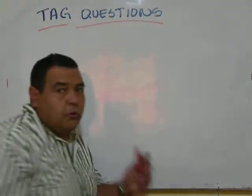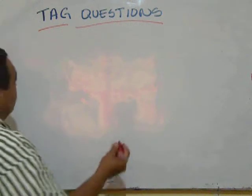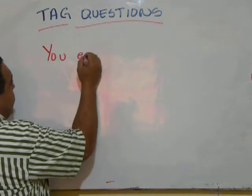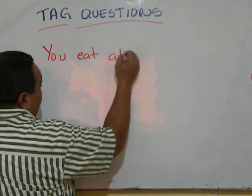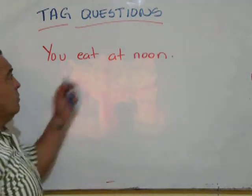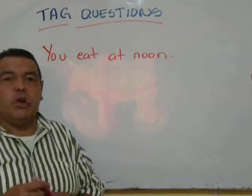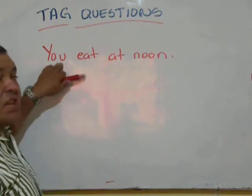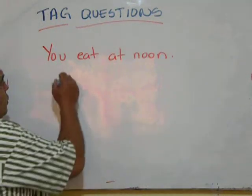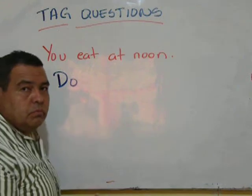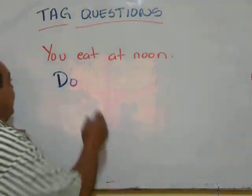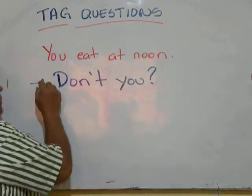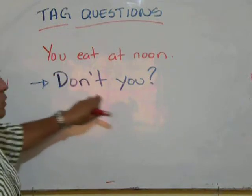Here's another example: 'You eat at noon.' The tag question has to go in a negative expression. Since we're talking about 'you,' we use 'do.' So: 'You eat at noon, don't you?'